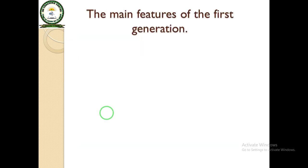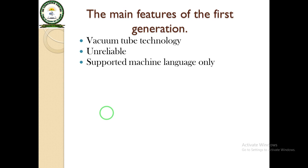The computers in this generation used machine code, or machine language, as the programming language. The main feature of the first generation was vacuum tube technology. In this generation, vacuum tubes were used and they were unreliable, supported machine language only, and were very expensive, so only large organizations were able to purchase them.